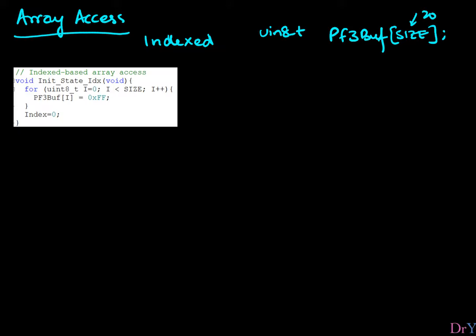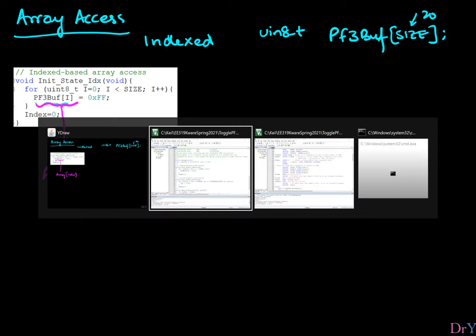We will initialize this buffer with some dummy values. In the C version, we use the notation array followed by the index. We iterate with a for loop: i equals 0, i less than size, i++. Each time we access an element, we write pf3_buff[i] and set it to 0xFF, so all elements end up with the same value.